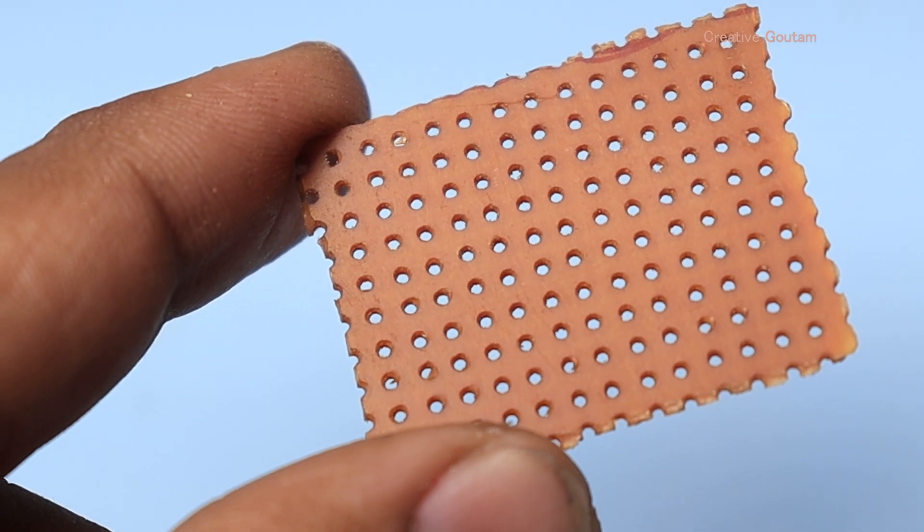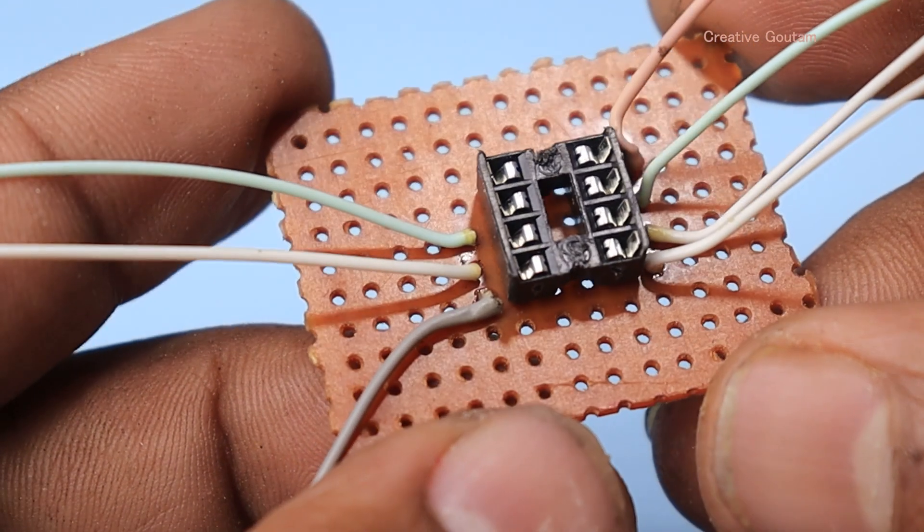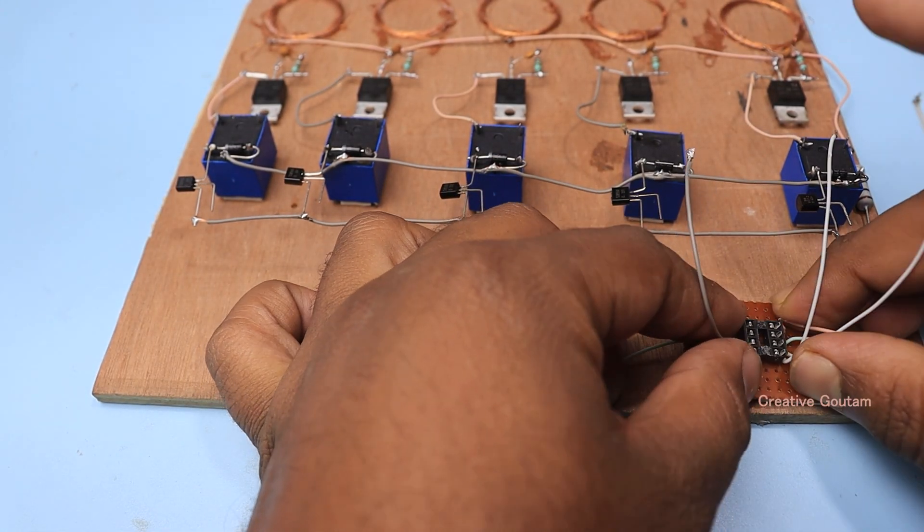In a piece of zero PCB, I placed an 8-pin IC base and connected small wires for every pin instead of pin number one. I placed it in the platform and connected as diagram.